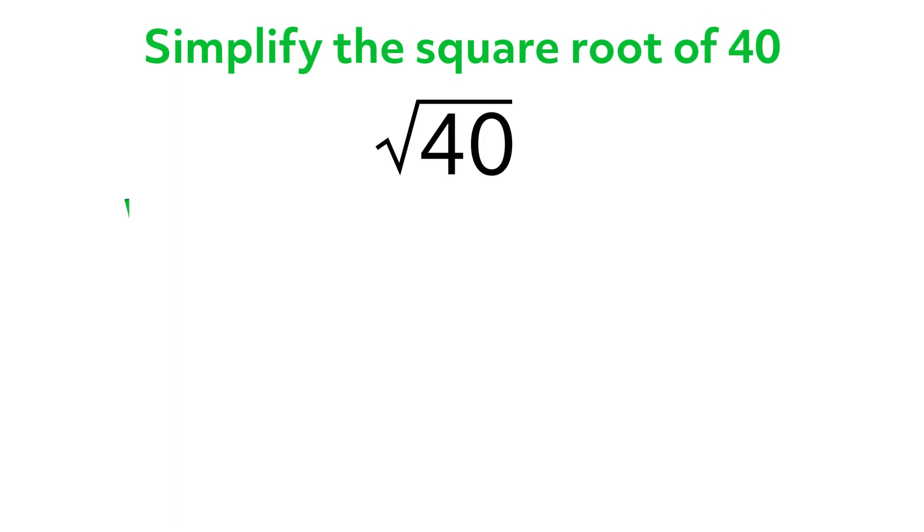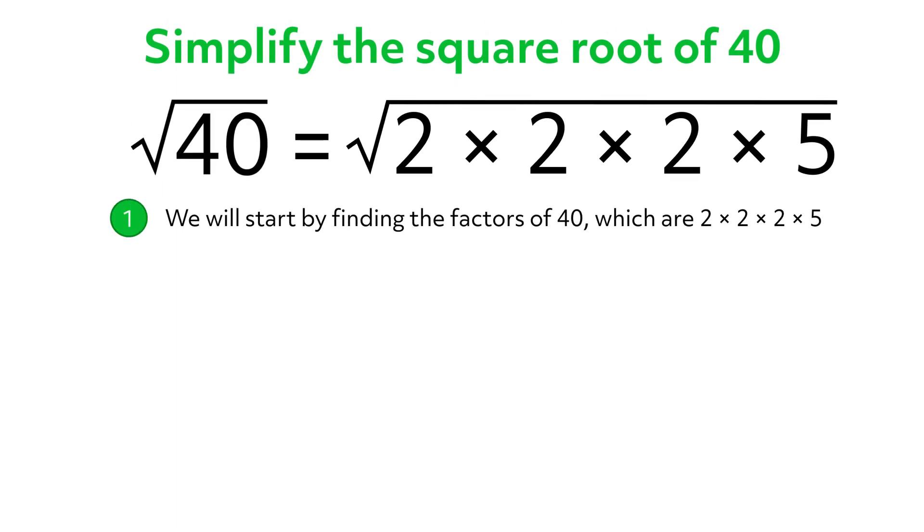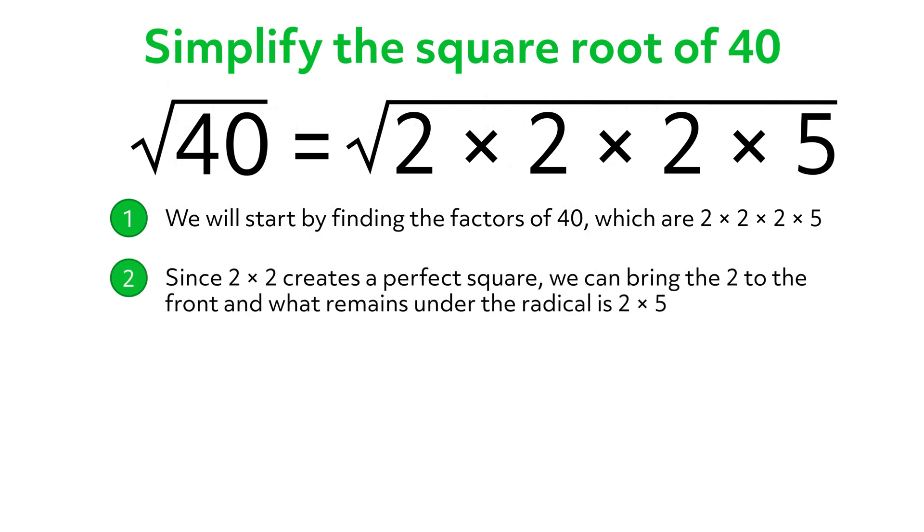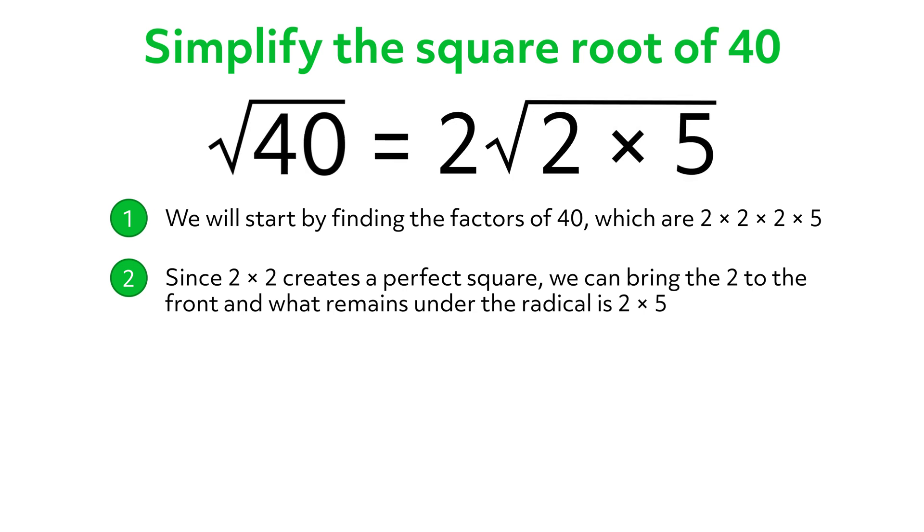Simplify the square root of 40. We will start by finding the factors of 40, which are 2 times 2 times 2 times 5. Since 2 times 2 creates a perfect square, we can bring the 2 to the front, and what remains under the radical is 2 times 5.